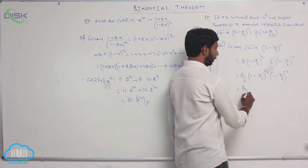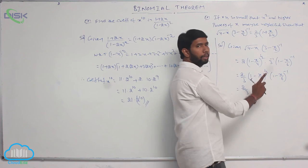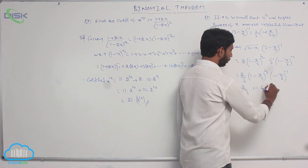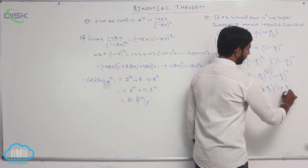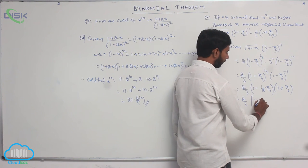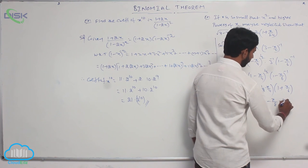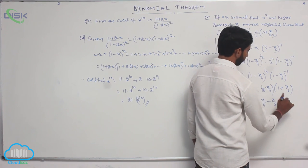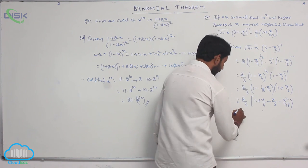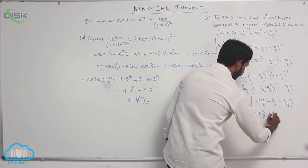Since x squared and higher powers are neglected, 1 plus x whole power n can be written as 1 plus nx. So 1 minus x by 4 whole power 1 by 2 becomes 1 minus 1 by 2 into x by 4, and 1 minus x by 6 whole power minus 1 becomes 1 plus x by 6. Simplifying the terms: 2 by 3 into 1 plus x by 6 minus x by 8 minus x squared by 48. Neglecting x squared, we get 2 by 3 into 1 plus x by 6 minus x by 8.